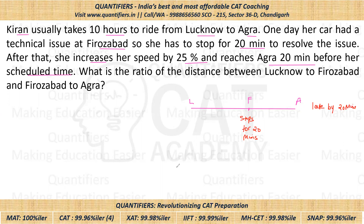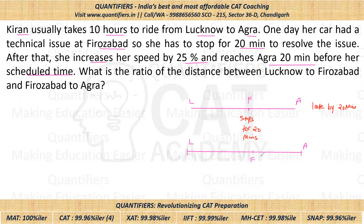But in actual, she increases her speed by 25 percent from Firozabad to Agra. So let me draw another figure: Lucknow, Agra, Firozabad. From Firozabad to Agra she increases her speed by 25 percent and is able to reach 20 minutes before her scheduled time — so she reaches 20 minutes early.